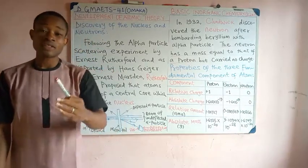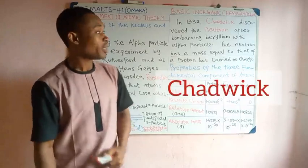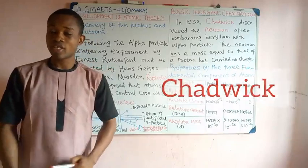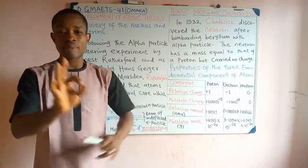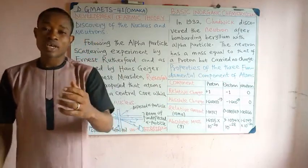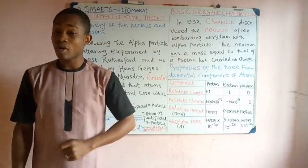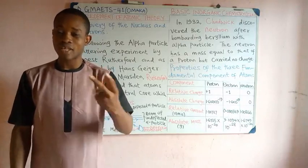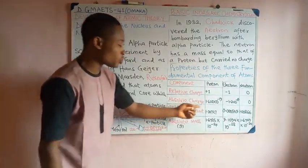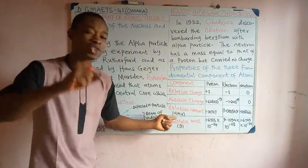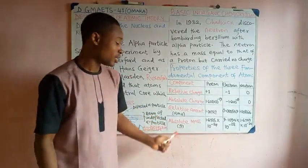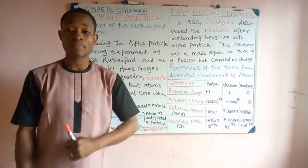In 1932, Chadwick, from his experiment of bombarding beryllium with alpha particles, discovered the neutron. He stated that the neutron has the same mass as the proton but carries no charge. We now look at the properties of the fundamental components of the atom: protons, electrons, and neutrons, classified under relative charge, absolute charge, relative mass in atomic mass units, and absolute mass in grams.